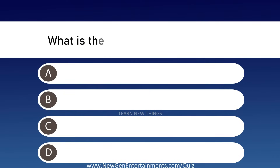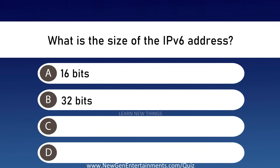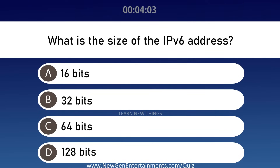What is the size of the IPv6 address? Options are A: 16 bits, B: 32 bits, C: 64 bits, and D: 128 bits. Answer is Option D, 128 bits.